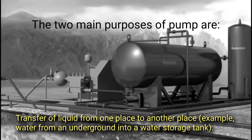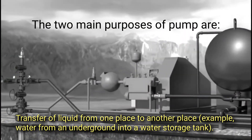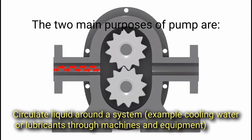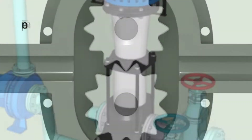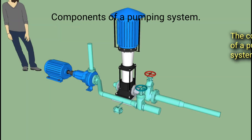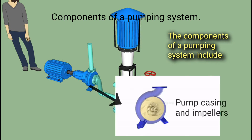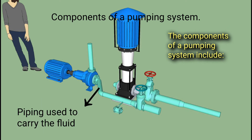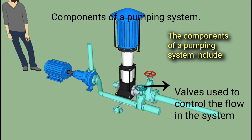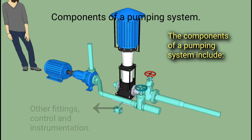The second purpose is to circulate liquid around a system — for example, cooling water or lubricants through machines and equipment. The components of a pumping system include: pump casing and impellers, prime movers such as electric motors, diesel engines, or air systems, piping used to carry the fluid, valves used to control the flow in the system, and other fittings, control, and instrumentation.